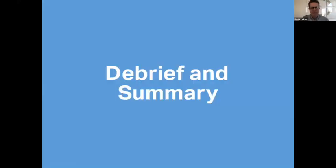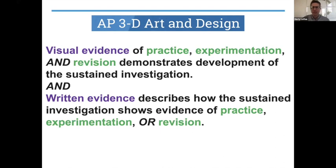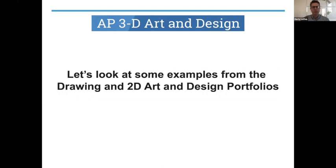To debrief, just before we get on to Celestin and Marilyn — this is your aiming point. If you think about this part of the rubric, think about how the visual evidence as well as the written evidence describes or visually demonstrates the development of that sustained investigation, as well as the practice, experimentation, and revision. Those are the big things we want to focus on.